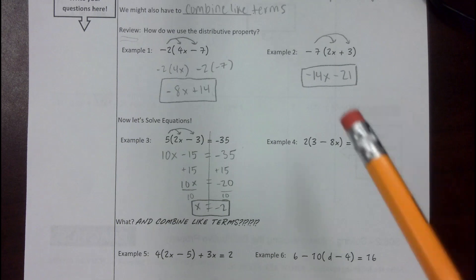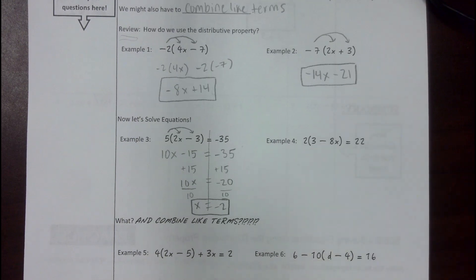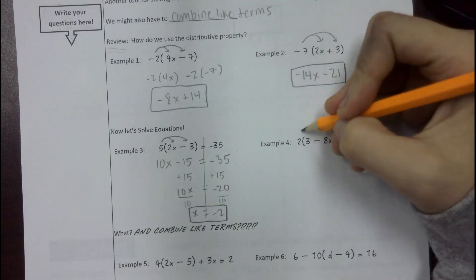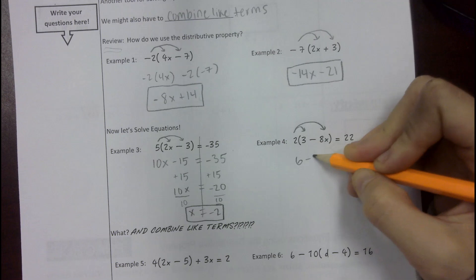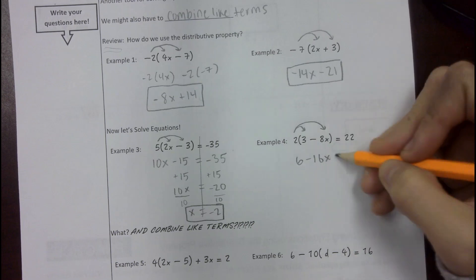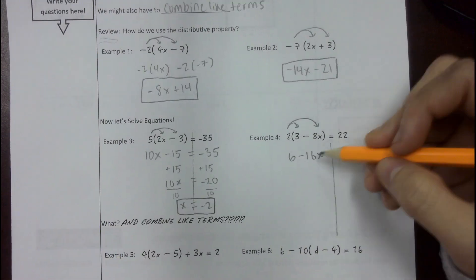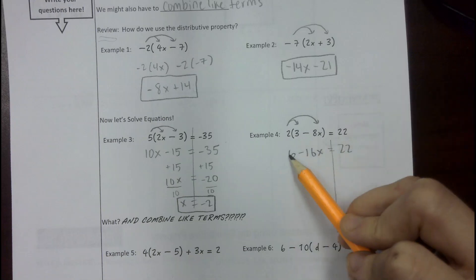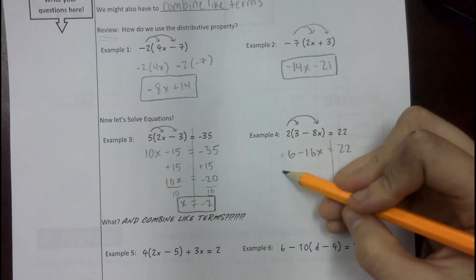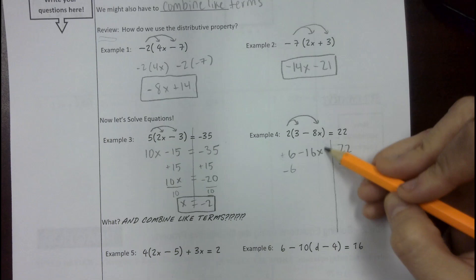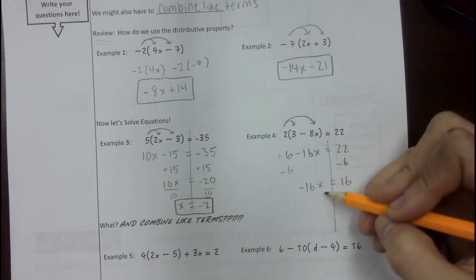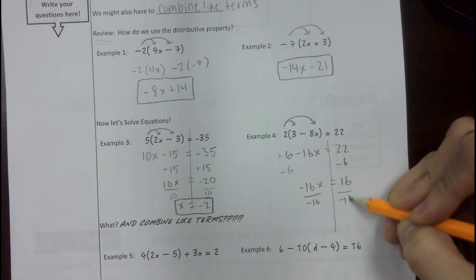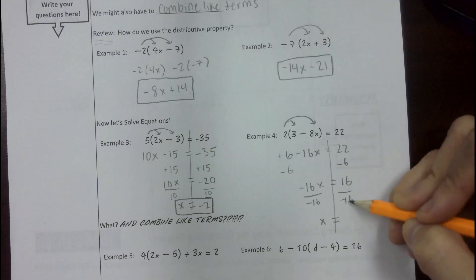Once you're done with example 3, do example 4 on your own. This one's tricky because there are some negatives, but I saw a lot of good work. We're going to distribute the 2: 2 times 3 is 6, and 2 times negative 8x is negative 16x. Then the 22. Solving for x — when there's no negative in front, this is a positive 6, so we minus 6 from both sides. Negative 16x equals 22 minus 6, which is 16. Divide by negative 16 — don't forget the negative — and we get x equals negative 1.